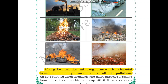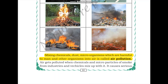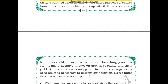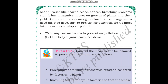Air gets polluted when chemicals and microparticles of smoke from industries and vehicles mix with it. It causes serious health issues like heart disease, cancer, and breathing problems. It also has a negative impact on the growth of plants and their yield. Some animal races may go extinct. Since all organisms need air, it is necessary to prevent air pollution.